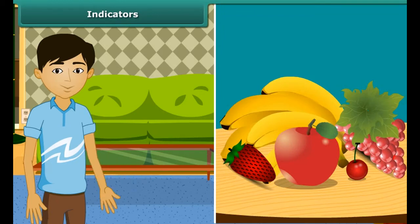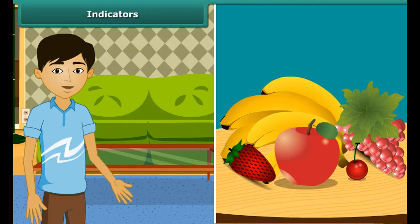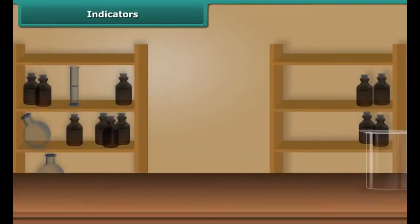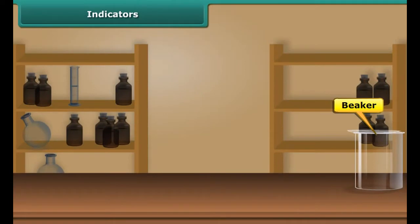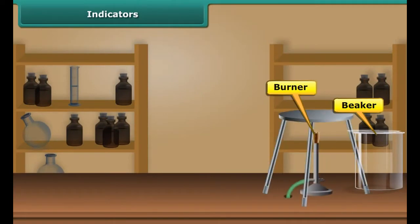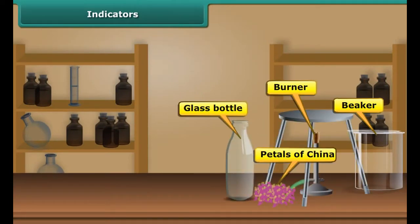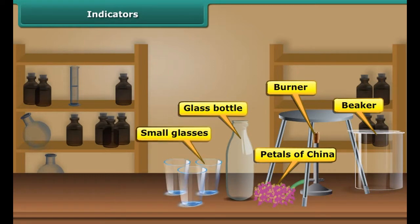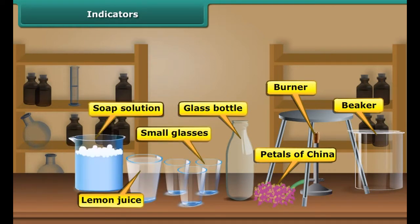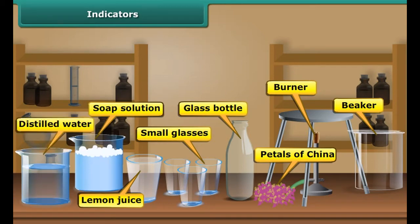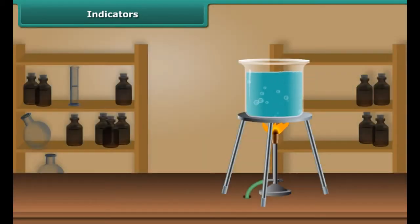You can easily test the acidic or basic nature of a substance by making a simple indicator solution at home. You will need a beaker, a gas stove, petals of China rose, a clean glass bottle, three small glasses, lemon juice, soap solution, and distilled water.